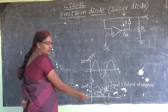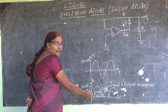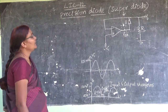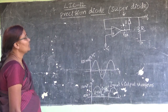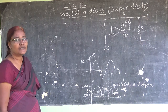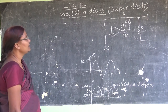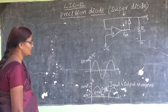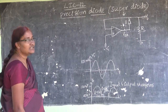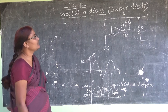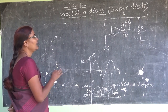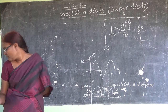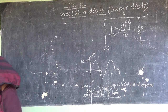We are going to learn the applications of op-amp. Op-amp can be used to get half-wave rectification and full-wave rectification. We can design a very efficient half-wave rectifier and full-wave rectifier by using op-amps.